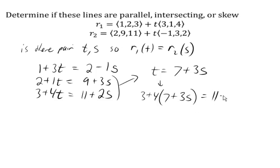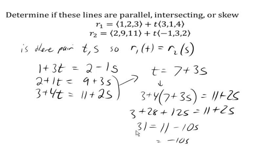And we got 3 plus 28 plus 12s equals 11 plus 2s. So 31 equals 11. Now we're going to subtract 12s from both sides. So minus 10s, negative 10s, equals now subtracting 11 from both sides, 20. So s will be negative 2.